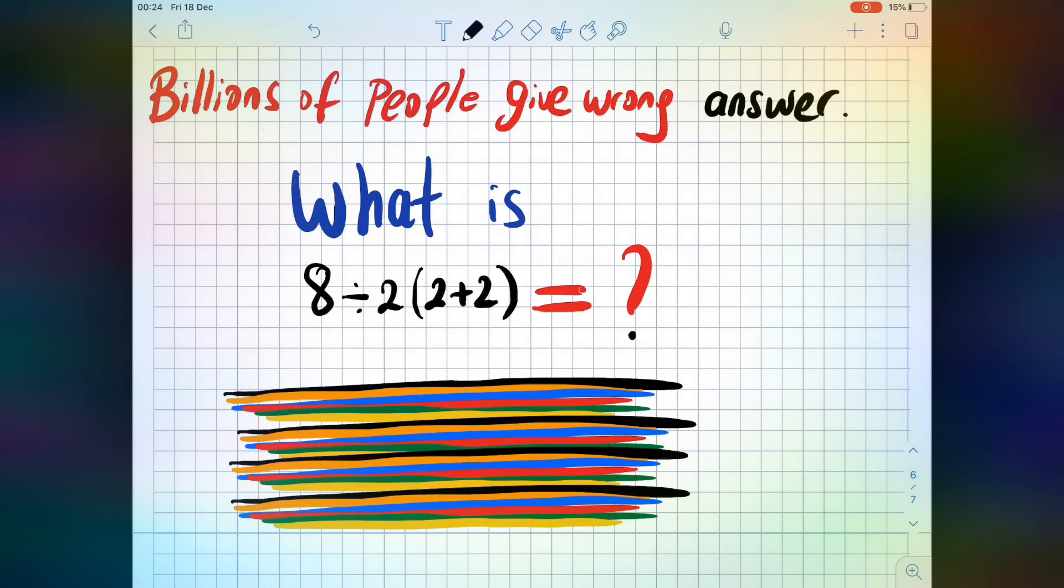Will I add 2+2, then multiply by 2, and 8÷8? Or will we start from left? You may give different answers, but let's see the correct answer at the end.